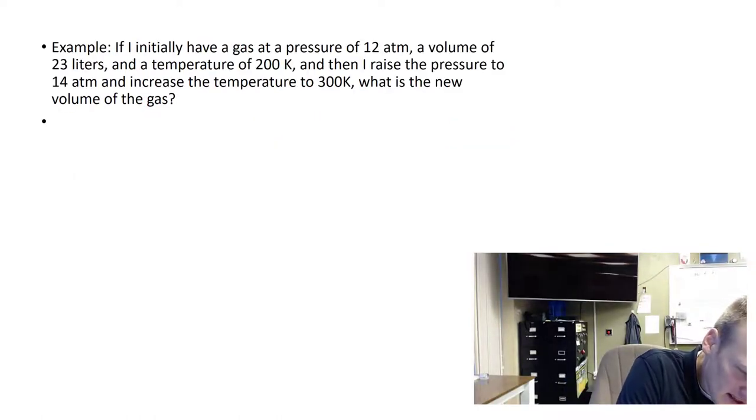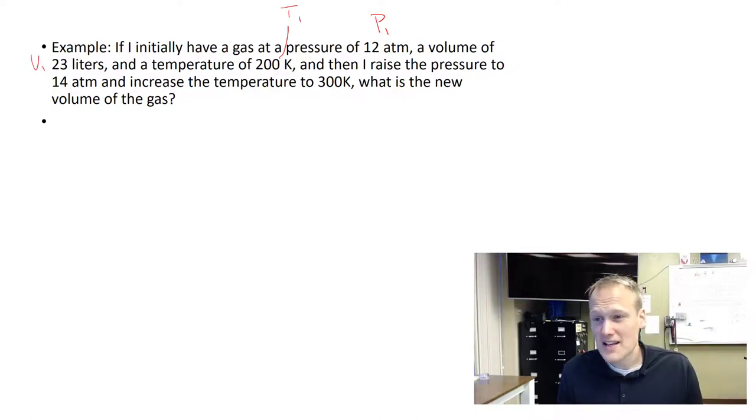So we have a gas that's at a pressure of 12 atmospheres, so that would be P1, and a volume of 23 liters, so that's V1, and a temperature of 200 Kelvin, so that's T1. The way you're going to know this is a combined gas law is because you're going to immediately recognize you have all three variables.